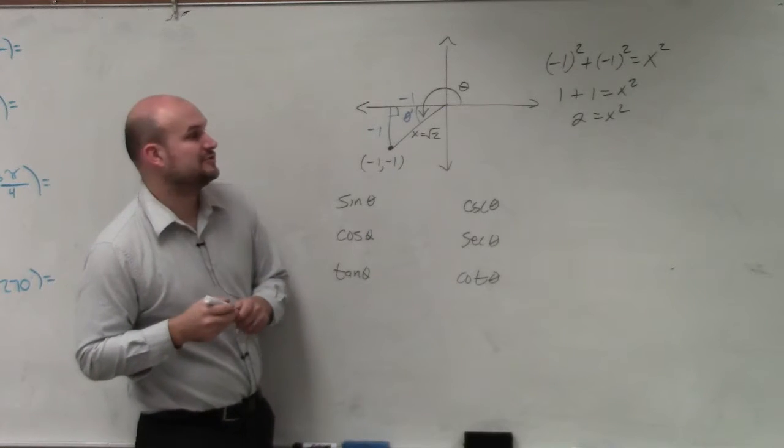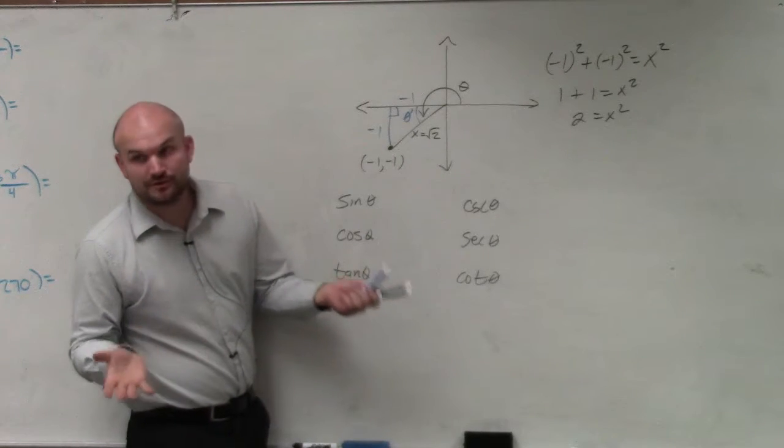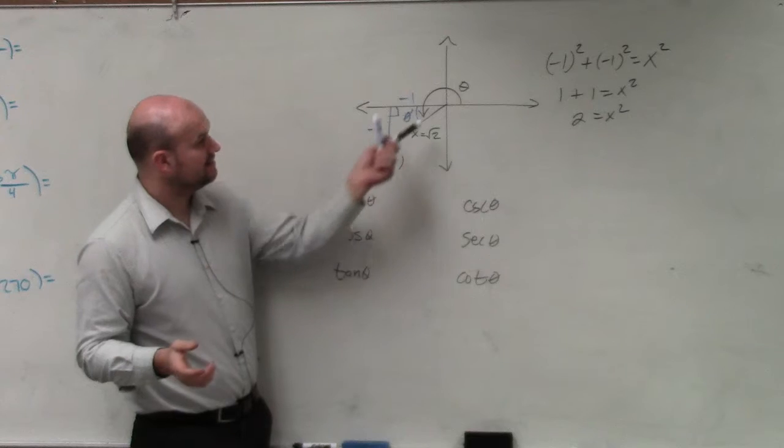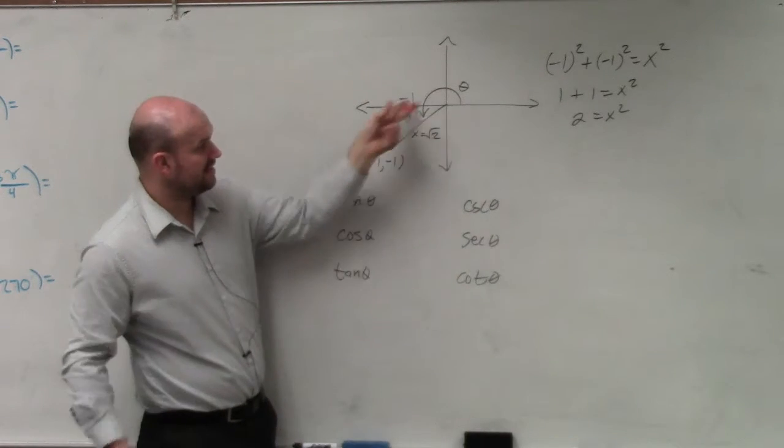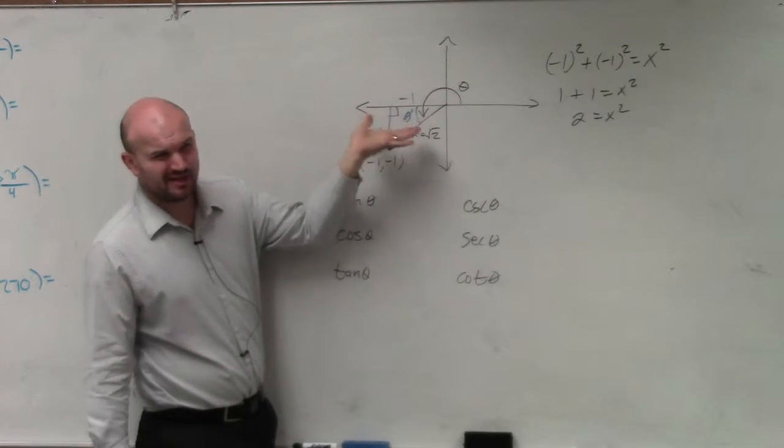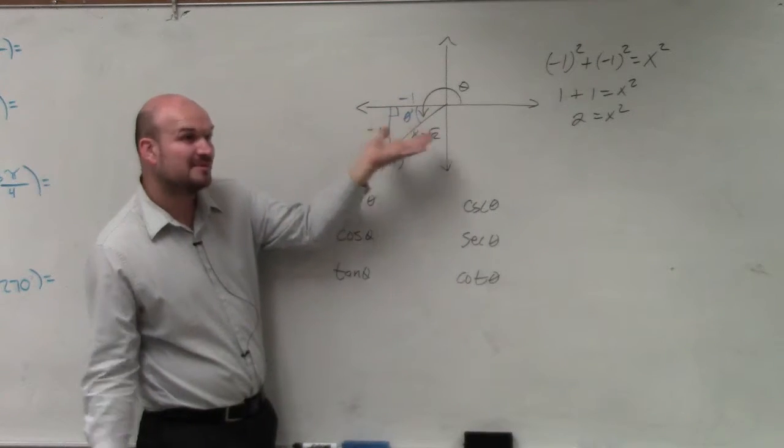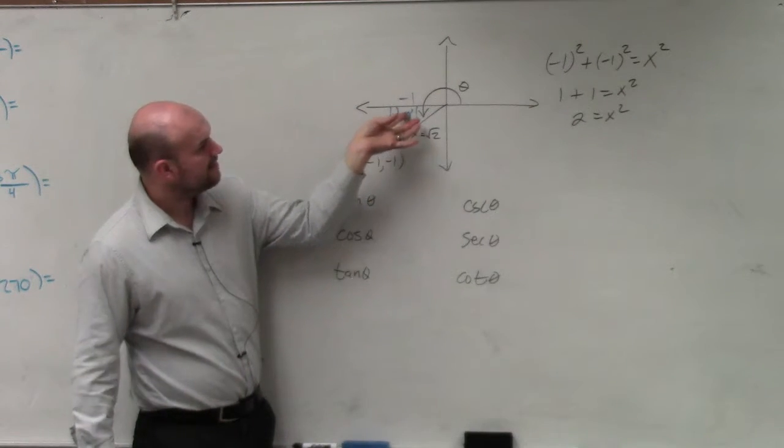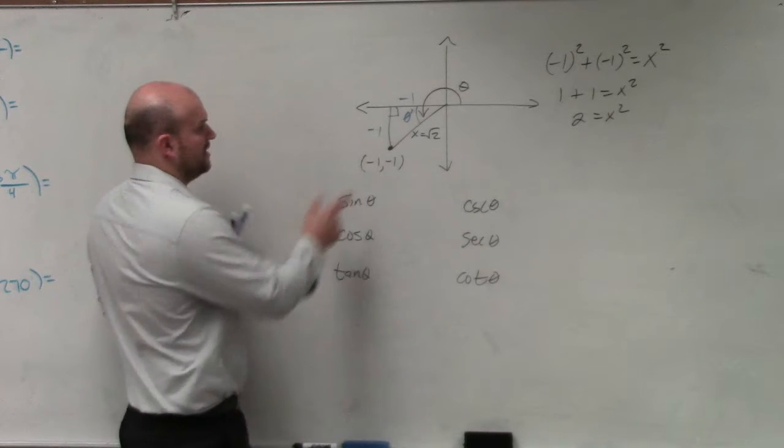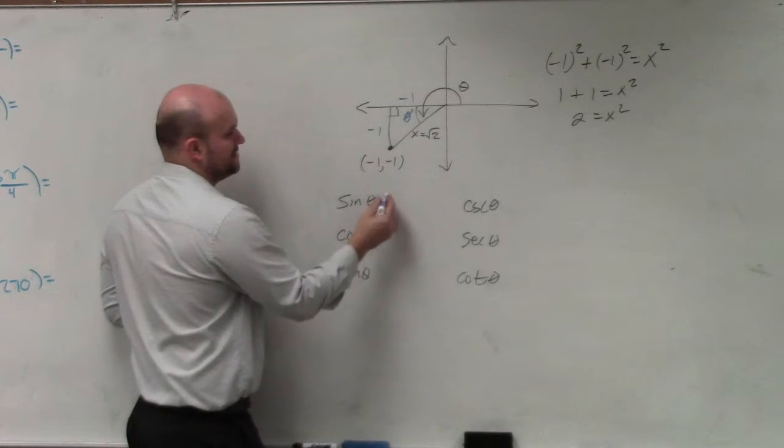Now, when writing my trigonometric functions, we need to know those relationships. Sine is of, we're going to use, instead of using theta, we're going to use theta prime. I don't want to overly confuse you, but we're just going to use theta prime, because it's the same thing. Sine of theta prime is going to be opposite over hypotenuse.